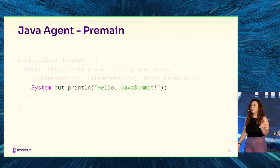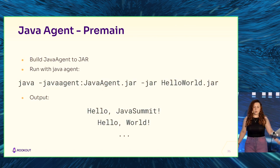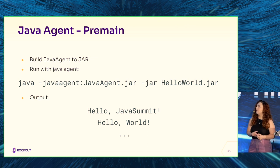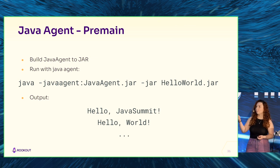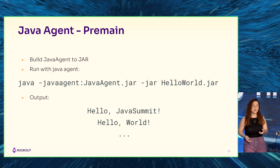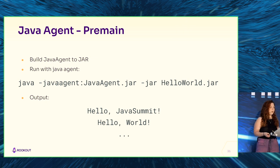For a very simple example, we have a Hello World program with a loop just printing hello world. We build our Java agent into a jar and run our Hello World jar with the new Java agent - no recompiling Hello World needed, just add that command line argument. Once that happens, we see that our pre-main function ran before Hello World's main function. This is pretty cool, but it doesn't really show the full power of Java agents.